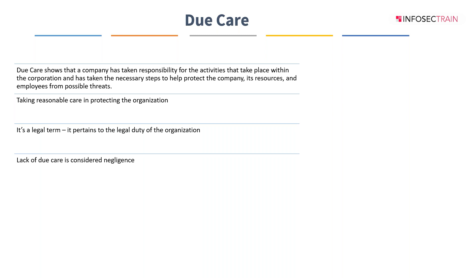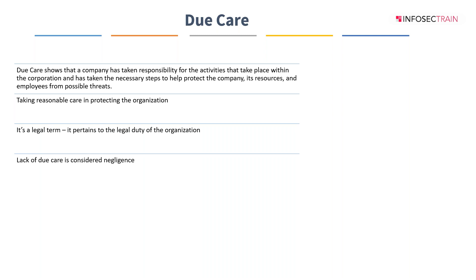Lack of due care is considered negligence. Examples of due care include deploying necessary security controls to protect the organization — for example, deploying firewalls in a cluster — and training employees in security operations.